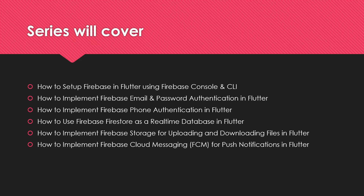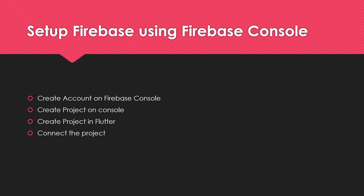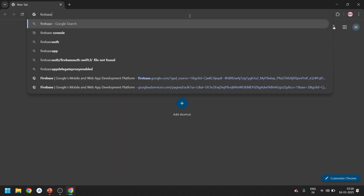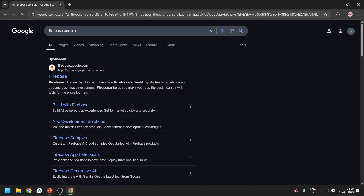In the first topic we will set up Firebase using the Firebase console. First, you should have a Gmail account to log in to the Firebase console. Second, we will be creating a project on the console. Third, we will create a Flutter project. In the last step we will connect both of the projects.